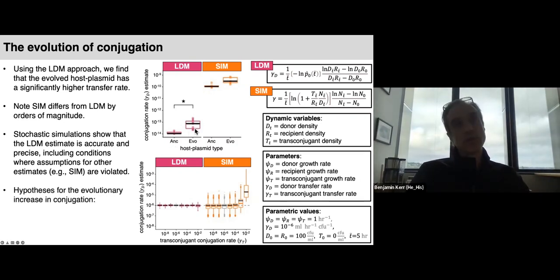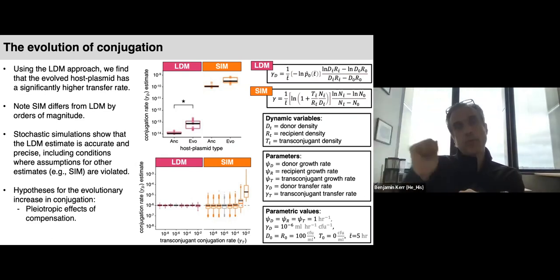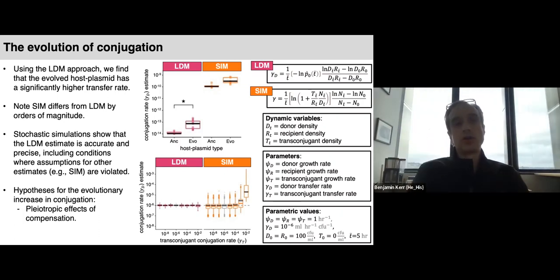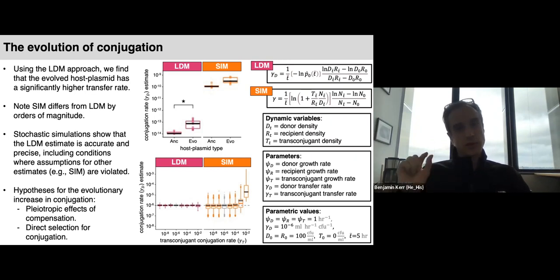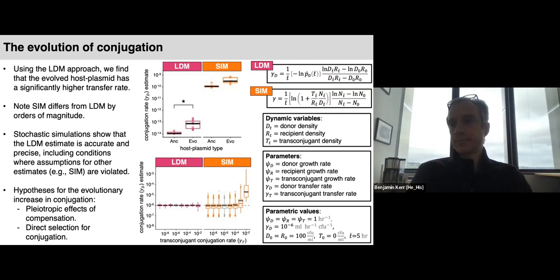Setting aside the methodological issues, the finding that transfer rate evolves is interesting in itself. We have two hypotheses: one is that a reduction in plasmid cost has a pleiotropic effect, making healthier cells better able to conjugate. Another is that there could be direct selection for higher conjugation rates if plasmid-bearing cells can donate plasmids to other plasmid-bearing cells — but I'll spare the details given time.